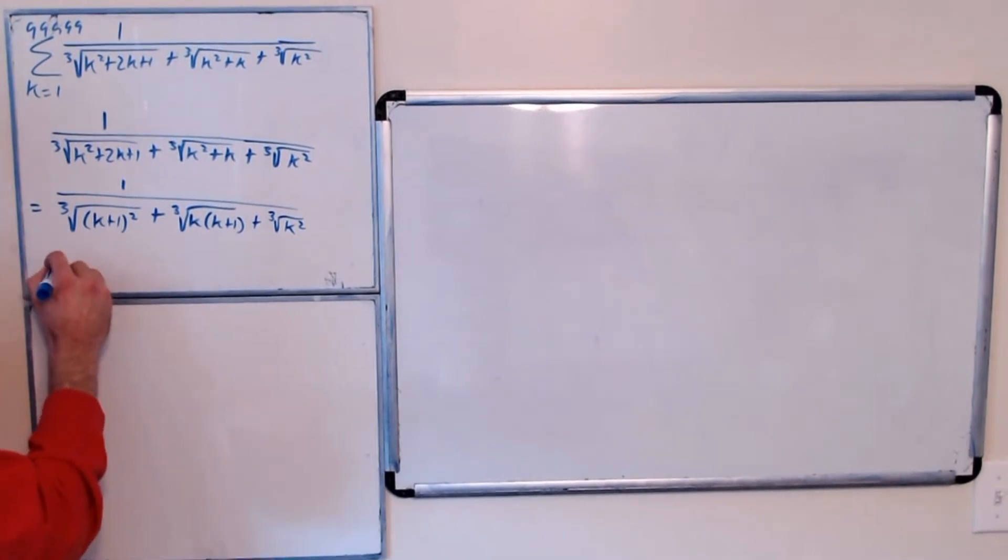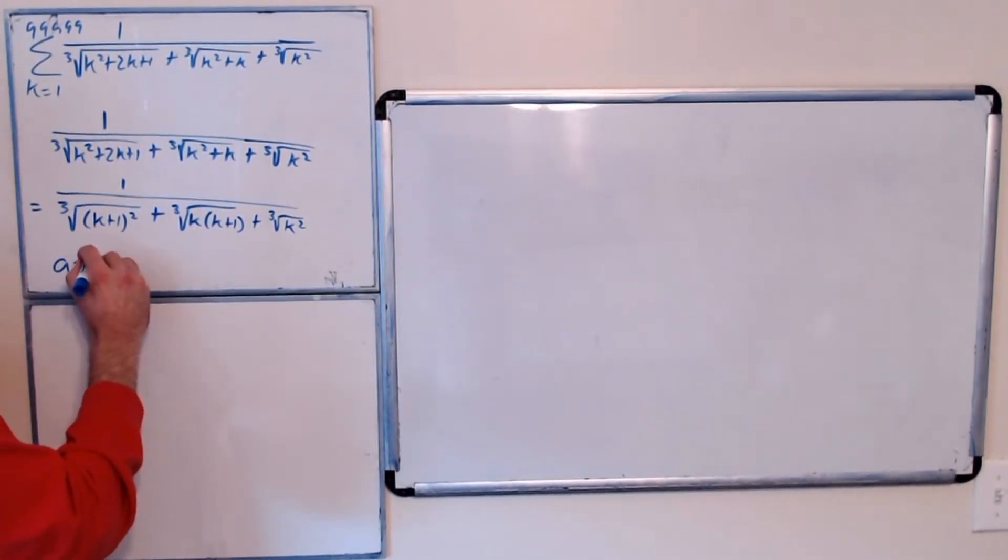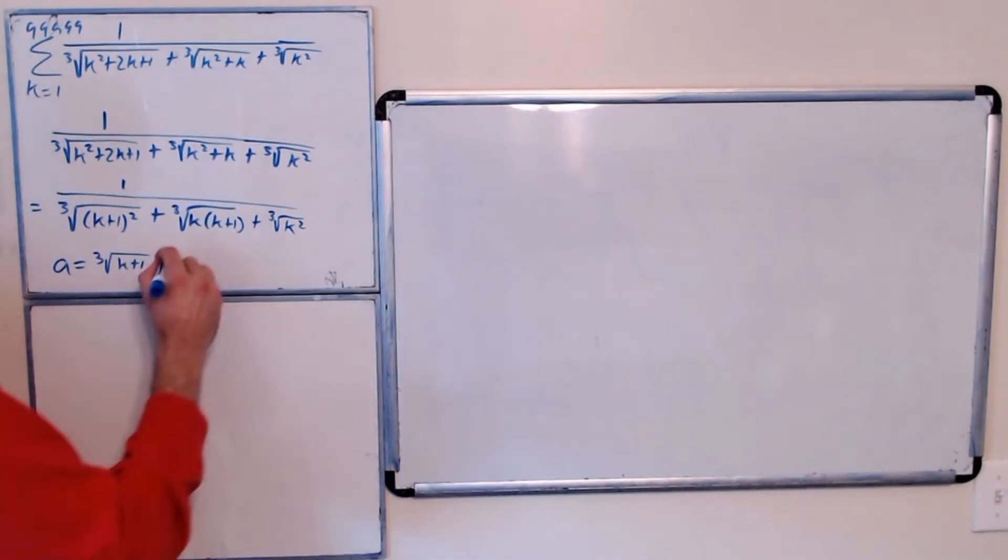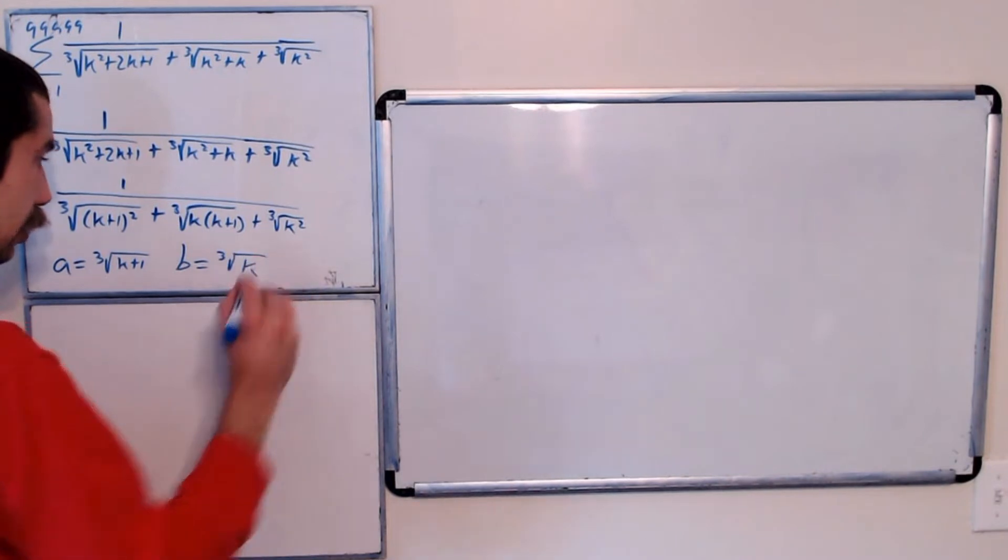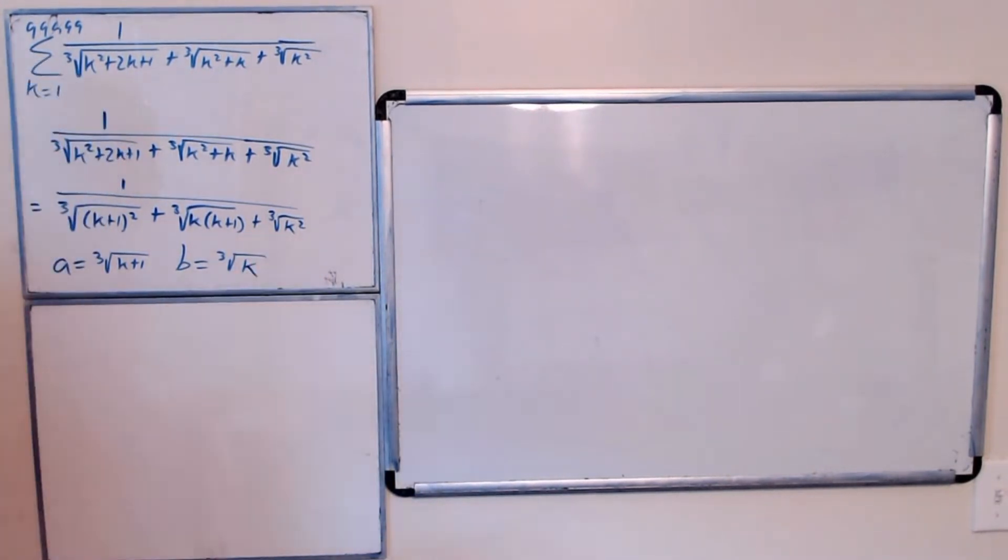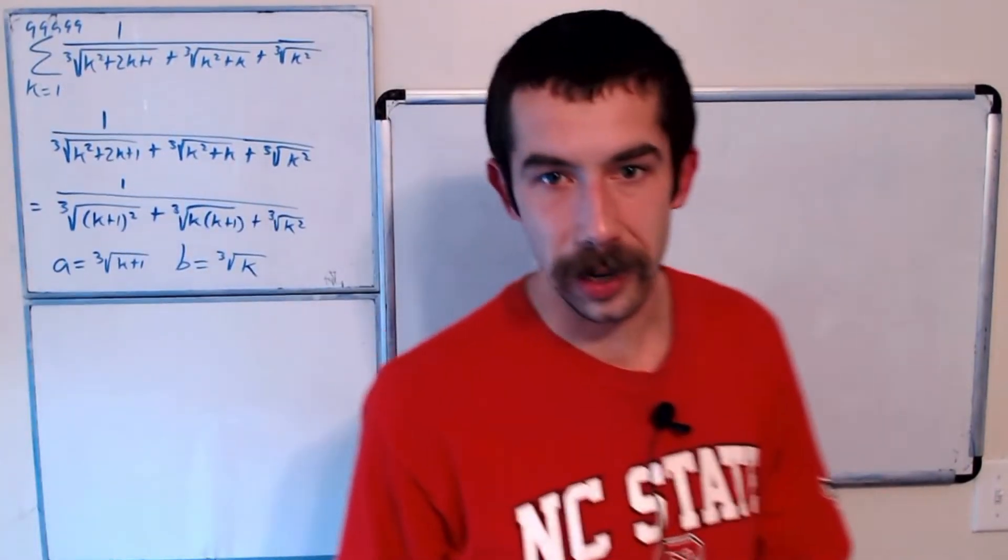And let's let a equal the cubed root of k plus 1. And we'll let b equal the cubed root of k. It's just going to make it easier to write.